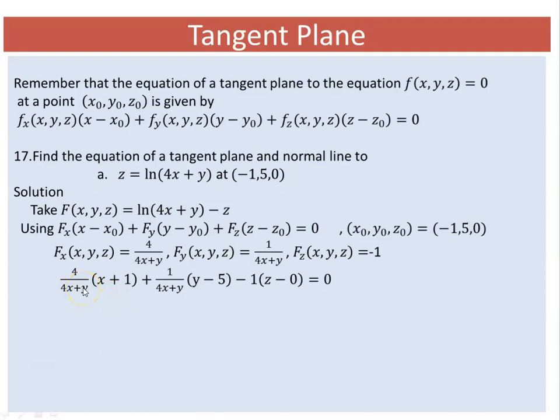Substituting the point (-1, 5), we get: 4/(4(-1) + 5)(x + 1) + 1/(4(-1) + 5)(y - 5) - z = 0. Since 4(-1) + 5 = 1, this simplifies to: 4(x + 1) + (y - 5) - z = 0, which gives us 4x + y - z + 4 - 5 = 0. Thus, 4x + y - z - 1 = 0 is the equation of the plane.